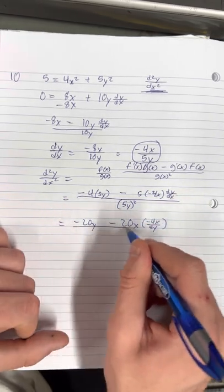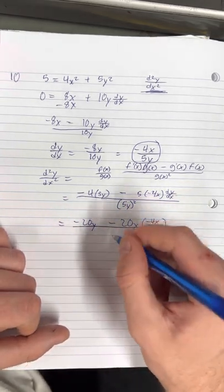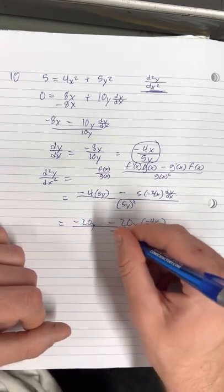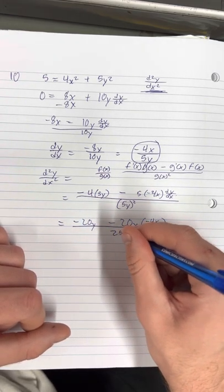Because that's what dy/dx is equal to. And then if we do 5y squared, it's 5y times 5y, so it's going to be 25y squared.